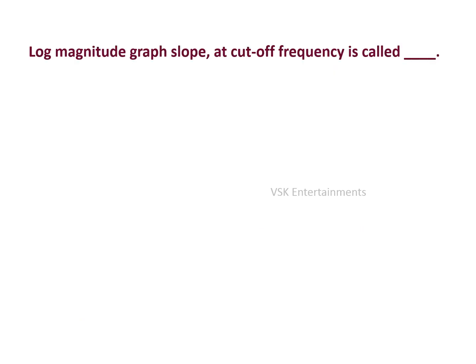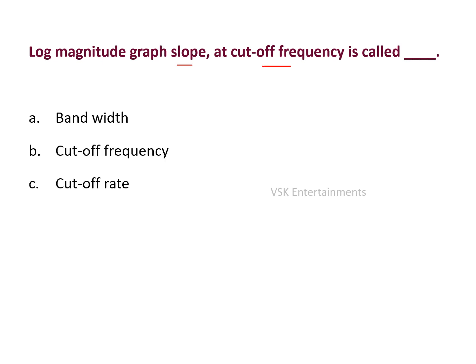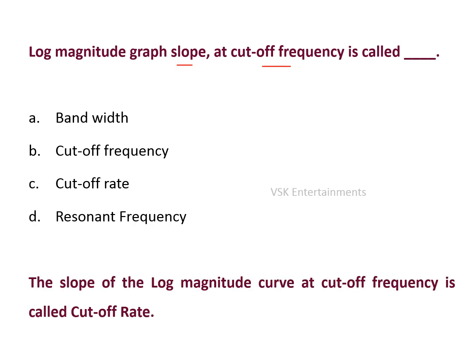Next question: the slope of the lag magnitude graph at cutoff frequency is called — options are bandwidth, cutoff frequency, cutoff rate, and resonant frequency. The slope of the lag magnitude graph at cutoff frequency is called the cutoff rate. So option C is the right answer.